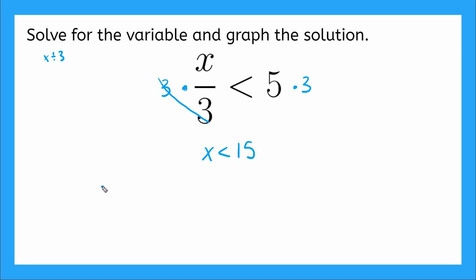So we solved for our variable and now we got to plot our solution, our graph our solution. Because this number is pretty big at 15. On my number line, I'm going to count by 5s. So I don't have to write so many numbers down. And we go in the negative direction over here. Alrighty. So x is less than 15. Where do I start my graph? At the 15.